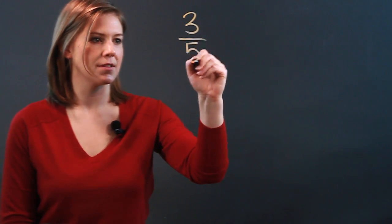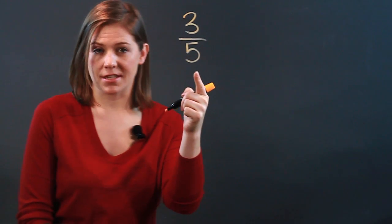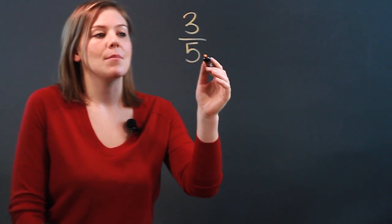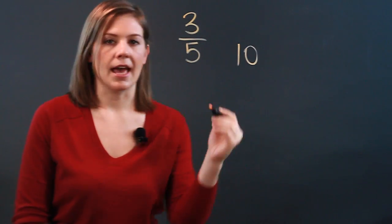If you had the fraction 3 fifths and you wanted to double the denominator. Of course, remember the bottom digit is the denominator and the top digit is your numerator. Here we want to double the 5. We want to make it 10.